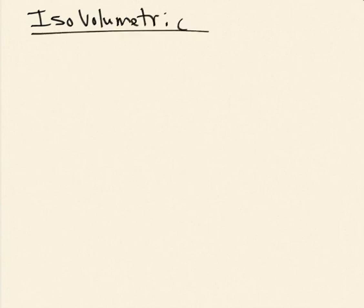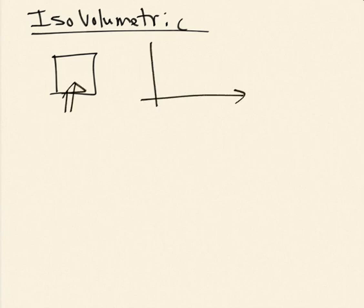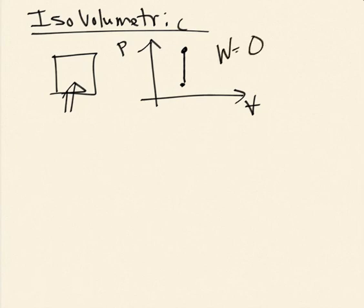The isovolumetric process is very simple, which is why I added it in. If the volume is constant — I've got a rigid box — then as I put heat in, there's no way for work to be done. Drawing that on a PV diagram: I start at state 1 and the volume doesn't change. If I put heat in, the pressure is going to rise inside. But the work done here is zero.